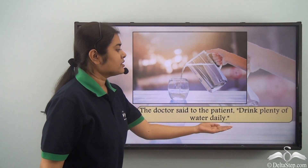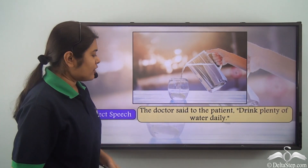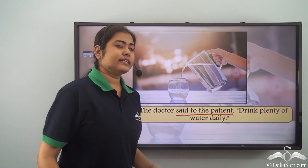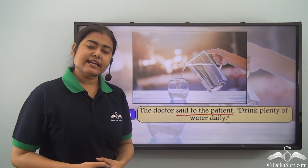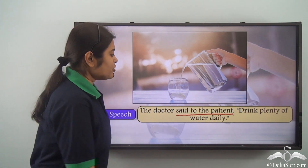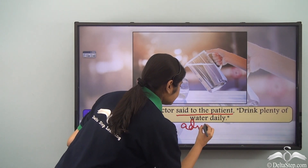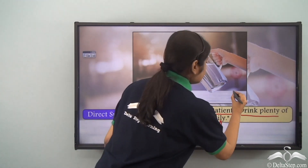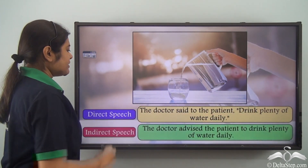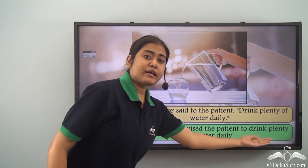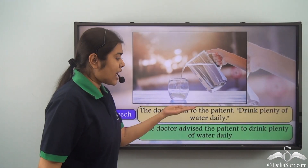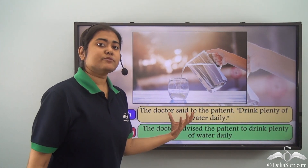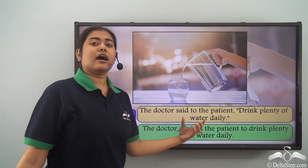The doctor said to the patient, 'Drink plenty of water daily.' This sentence is showing a form of advice — the doctor is advising the patient. So we use 'advised' as our reporting verb, and 'drink' becomes 'to drink'. Our sentence becomes: The doctor advised the patient to drink plenty of water daily. We have to understand what is being conveyed in the sentence and then accordingly choose our reporting verb.